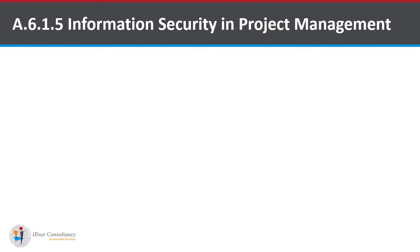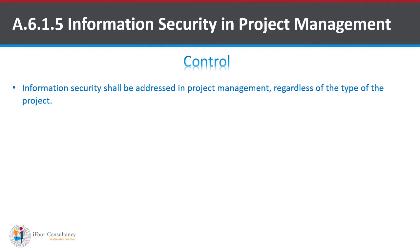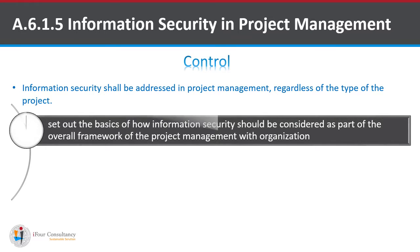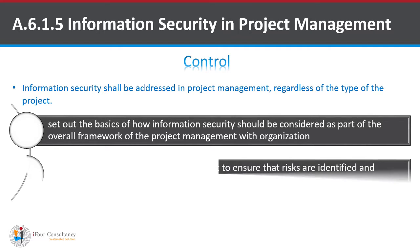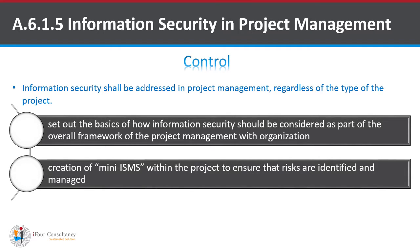A.6.1.5 focuses on information security in project management. The control states that information security shall be addressed in project management regardless of the type of the project. The objective sets out the basics of how information security should be considered as part of the overall framework of project management within the organization, including creation of a mini information security management system within the project to ensure that risks are identified and managed accordingly.